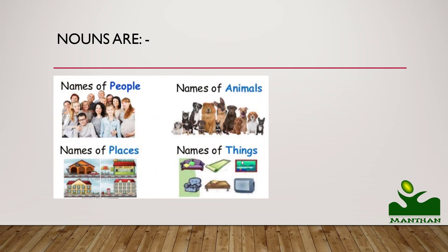So let us see through the pictures. Nouns are names of people, names of animals, names of places or names of things. Let us see it through pictures — so nouns are names of people, animals, places or things.